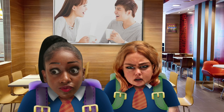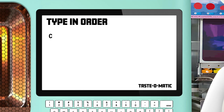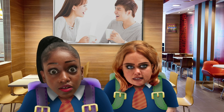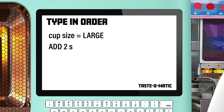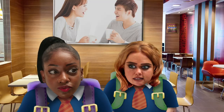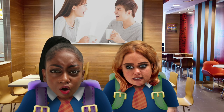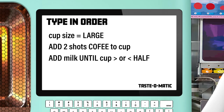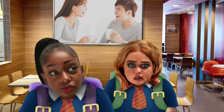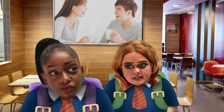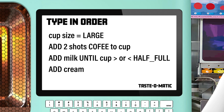What size do you want? Large. Cup size equals large. How many shots? One. It's Monday. Two. Add two shots coffee. Milk? Half a cup, more or less. Add milk until more or less half full. Sugar? It's bad for you. Anything else? Fill the rest up with cream. Add cream until full.